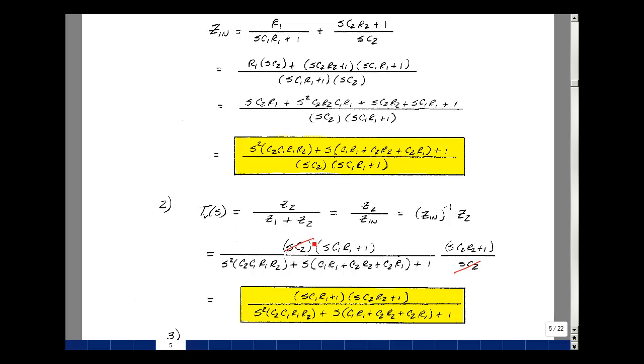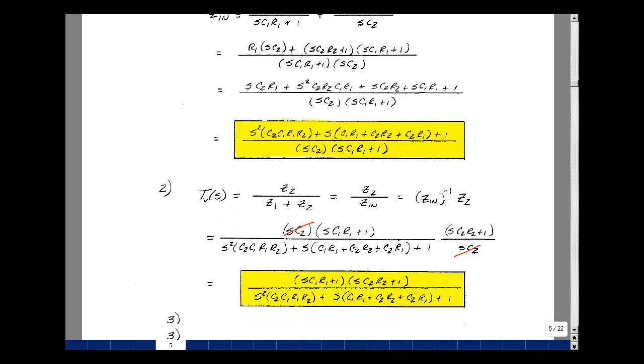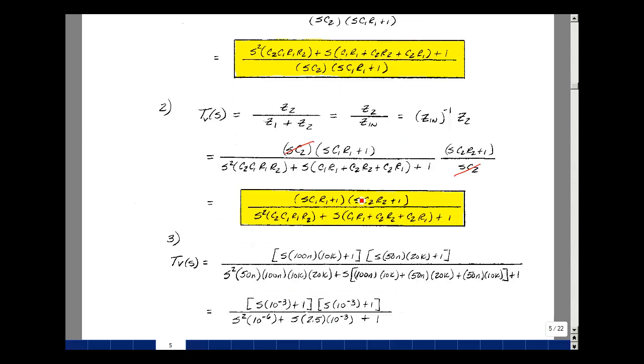These cancel, and I wind up getting this term times this term divided by our denominator. You can multiply this out or just leave it as it is. You've got the separation of the zeros. Here we've got this common denominator. We'll have to find the roots in this. Let's plug some values in. So C1 was 100 nanofarads, R1 was 10k, C2 was 50 nanofarads, and R2 was 20k.